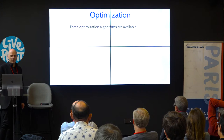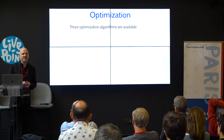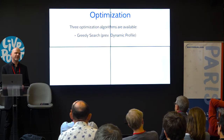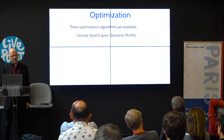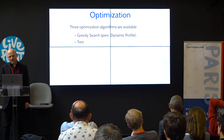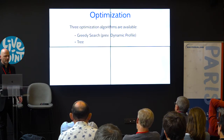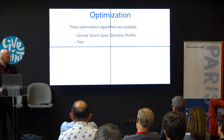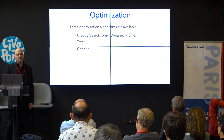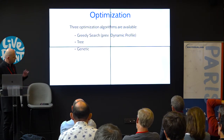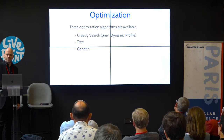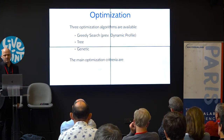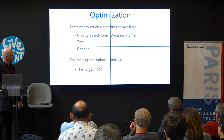We have three optimization algorithms available. The first is greedy search, previously called dynamic profile, which was in report analysis. The second is a tree search — a generalization of greedy search that looks ahead by excluding some drivers rather than just one step ahead. The third is a genetic algorithm, a much more comprehensive search. These three algorithms can be used for optimizing the target node, which we have had for 15 years, and since a few months ago, we also have the possibility to optimize a function node.